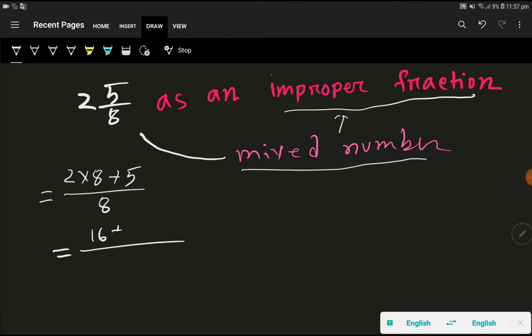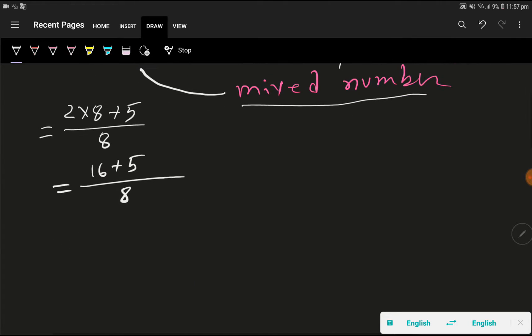We are getting 2 times 8, which gives 16, plus 5, divided by 8. This gives us 21 divided by 8. Notice that 21 is greater than 8, and this is the answer.